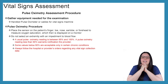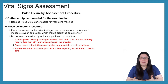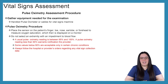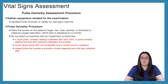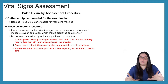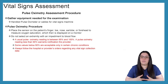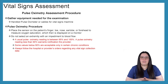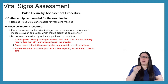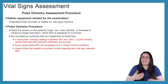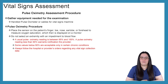Do not select an extremity with an impediment to blood flow. A usual pulse oximetry reading is between 95 to 100 percent for our adults. A pulse oximetry reading less than 90 percent warrants notification to the provider immediately, as well as interventions.